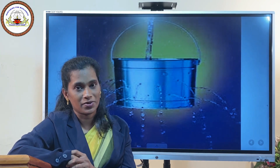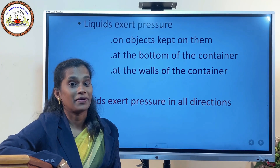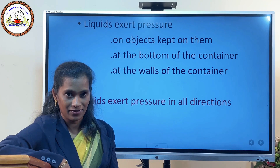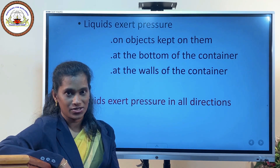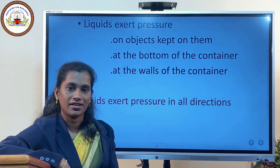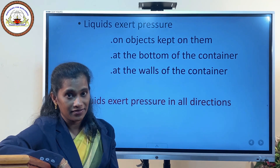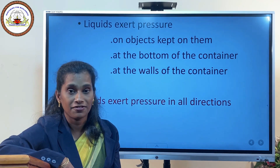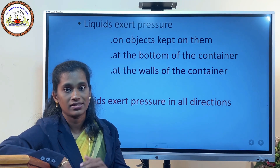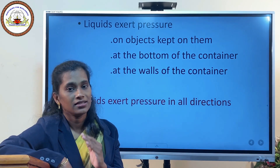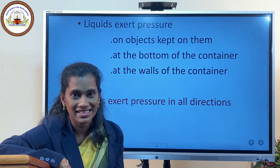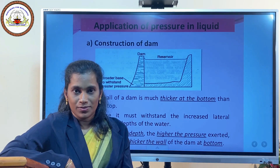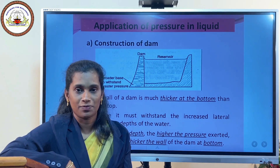First we discussed about the paper boat and understood that liquid exerts pressure on objects kept on it. Then we cut the bottle base and understood that liquids exert pressure at the base of the container. We made a hole on the lateral sides and understood that liquids exert pressure at the walls. We analyzed that pressure is more at greater depth, and at the same height pressure is the same. Altogether, we may conclude: liquids exert pressure in all directions.